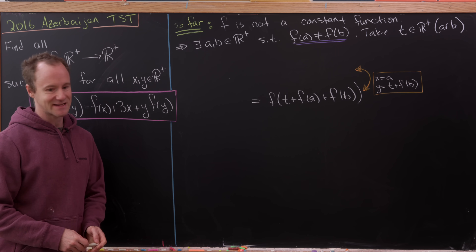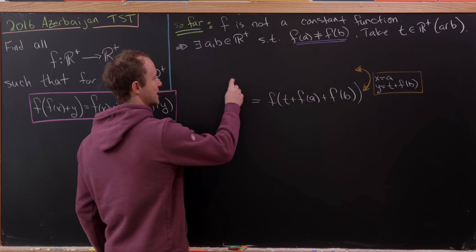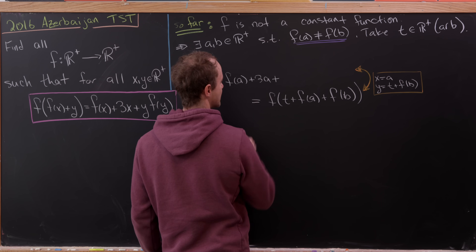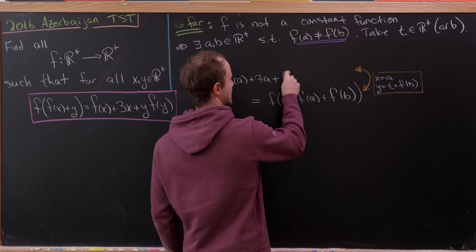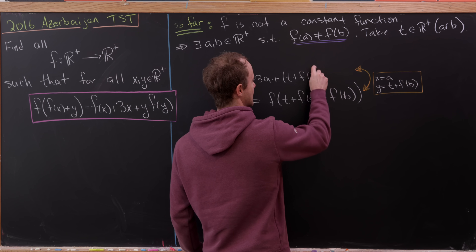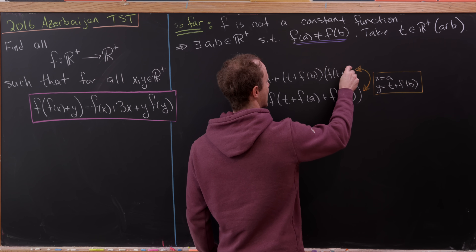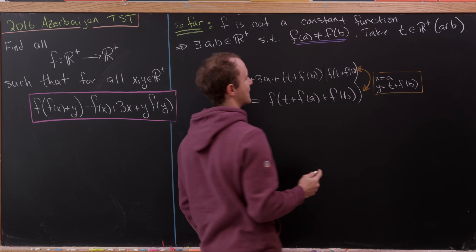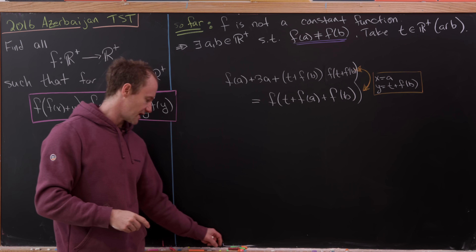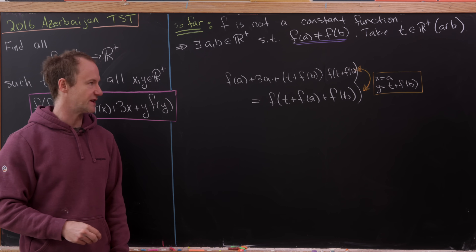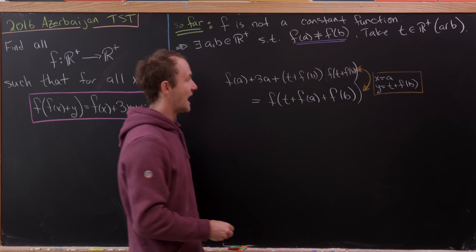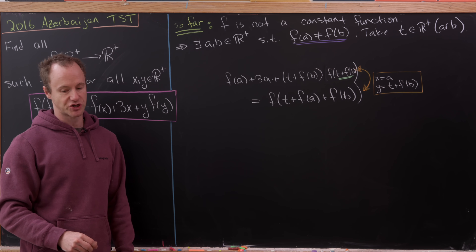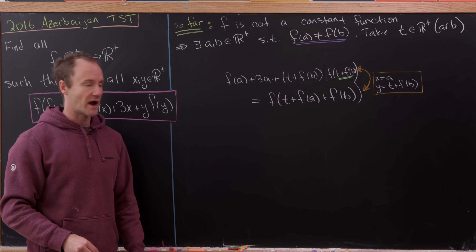With x = a and y = t + f(b), we get f(a) + 3a plus (t + f(b)) · f(t + f(b)). The motivation is now clear: we've got t + f(b) inside f on the right-hand side, which allows us to apply the functional equation a second time.